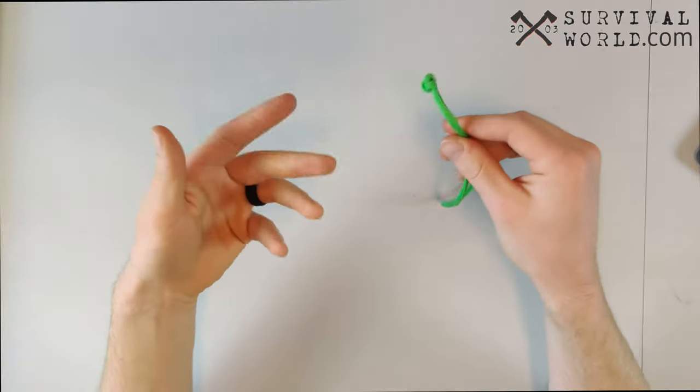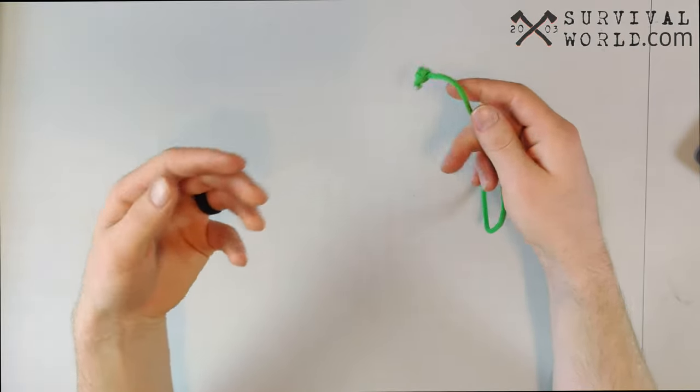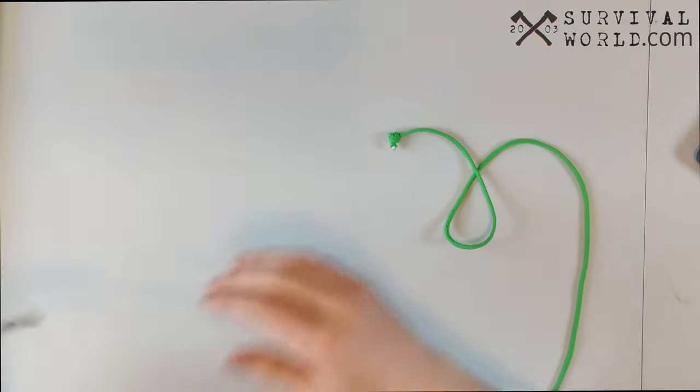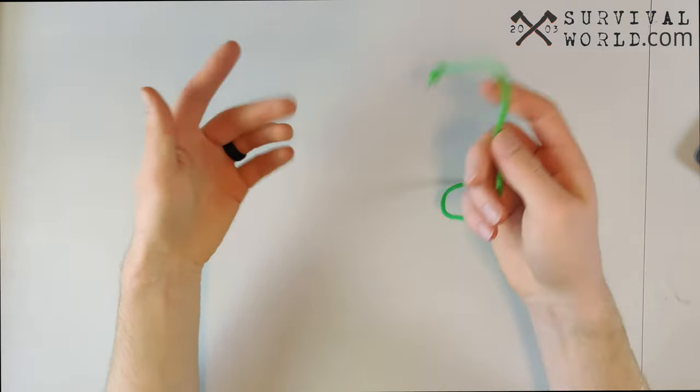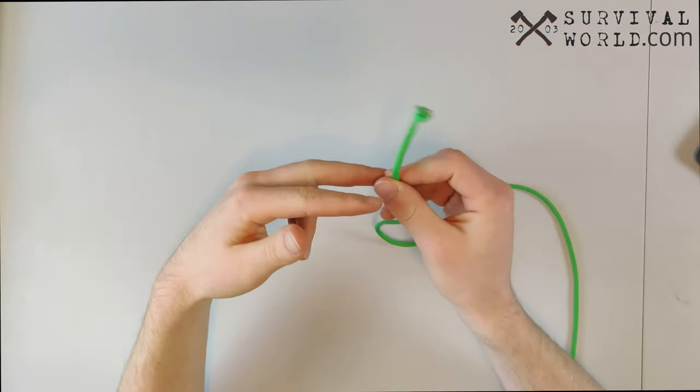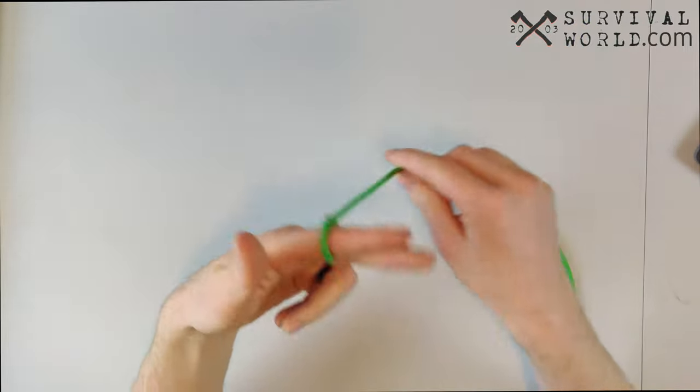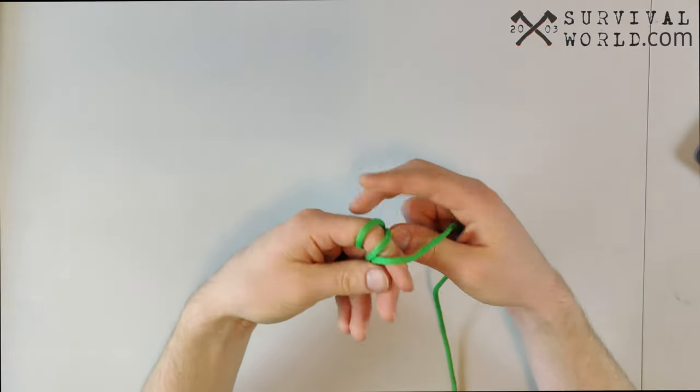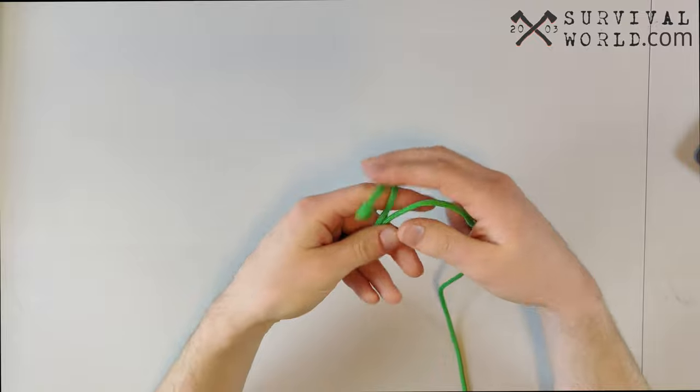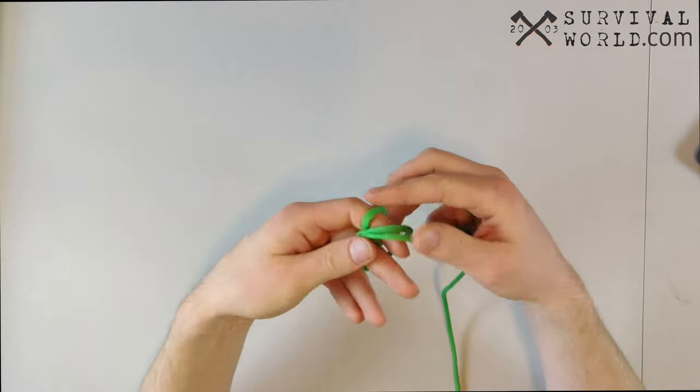So the smaller rope you have, the less fingers you need to use for this method. For large rope like this, I might want to use it around my entire four fingers, but for paracord I'm just going to use two fingers. So I'm going to take my stopper knot and I'm going to wrap this rope around my fingers three times. Once I've wrapped it around three times, the stopper knot just kind of stays in the middle of your knot.